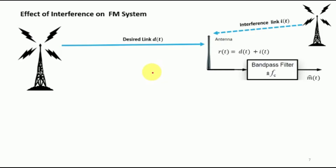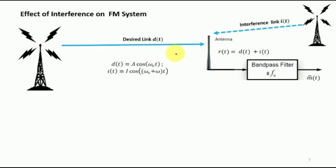In our present discussion we will reflect on the interference for such an FM system. The desired signal is assumed to be a pure sinusoid: A·cos(ωc·t), whereas the interference signal has amplitude i and is expressed as i·cos((ωc + ω)·t). The interference frequency is very near to ωc.